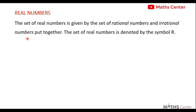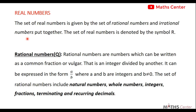Rational numbers are numbers which can be written as a common fraction or vulgar fraction — that is, an integer divided by another. It can be expressed in the form a over b, where a and b are integers and b is not equal to zero.